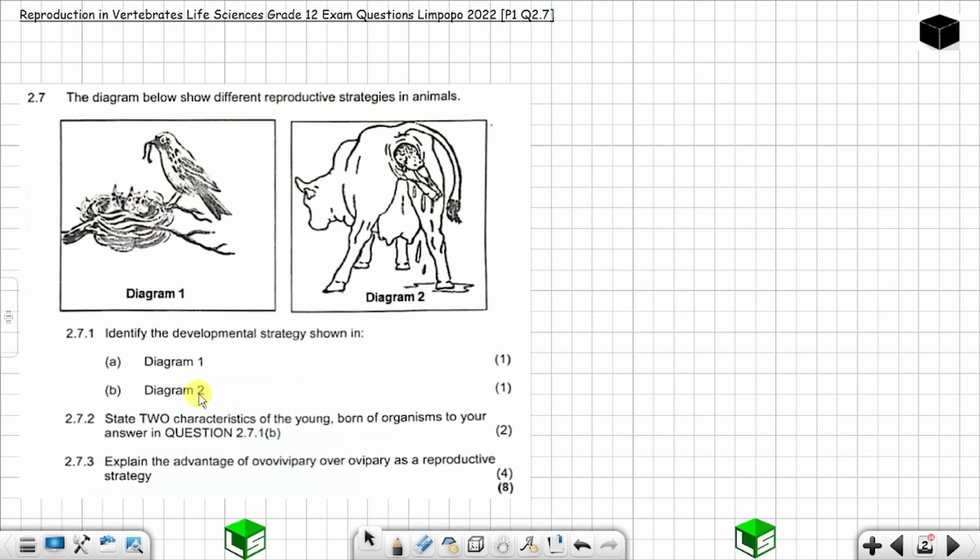Let's start with 2.7.1a. You have Diagram 1. They want you to say if this is altricial or precocial. You can see the chicks cannot move, the mother is feeding them, they are depending on the mother, so this is altricial. In Diagram 1, you have altricial development.